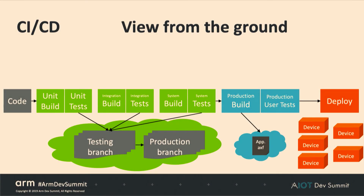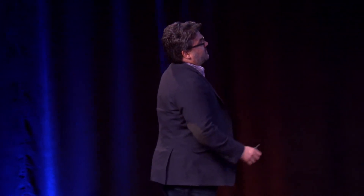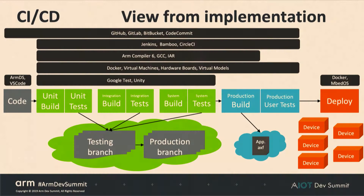At the implementation level you have your testing branch and production branch, your application, and all the different devices you need to deploy on. This is where it gets more specific: depending on your code revision tool — GitHub, GitLab, Bitbucket, CodeCommit — and your CI tool — Jenkins, Bamboo, CircleCI — as well as your compilers, virtual machines, and test frameworks like Google Test or Unity, things get more and more complicated.